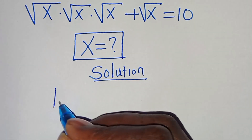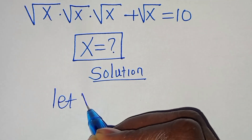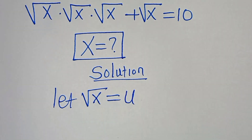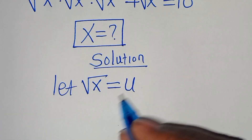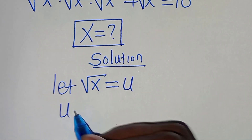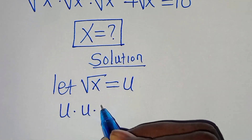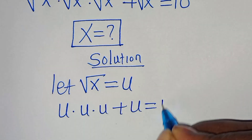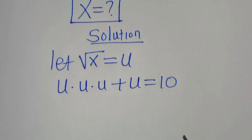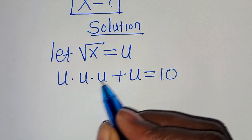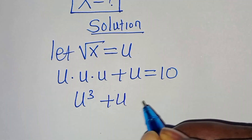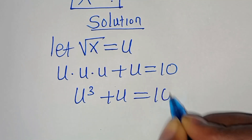Now, we can let the square root of x be equal to u. Substituting square root of x with u, we have that u multiplied by u multiplied by u, plus u, this is equal to 10. u times u times u is u to the power of 3, plus u, this is equal to 10.